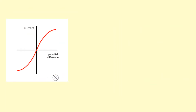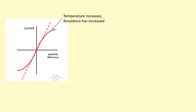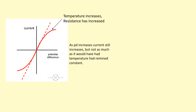Here's a graph showing how the current changes as you increase the potential difference. As you increase the potential difference, the current does still go up. However, it's no longer linear, and that's because of that increase in temperature at very high currents, and the resistance has gone up. Here's a line showing what would have happened if the temperature had stayed constant. In both cases, as potential difference increases, the current still does increase. However, with the increase in temperature and the increase in resistance, the current doesn't increase as much.